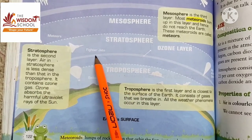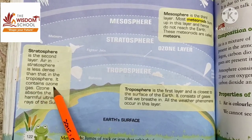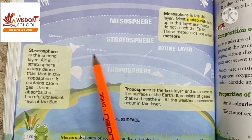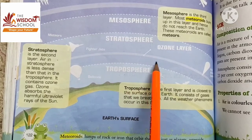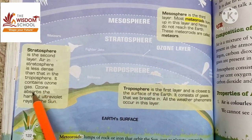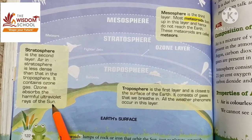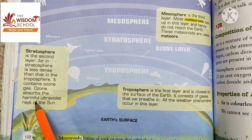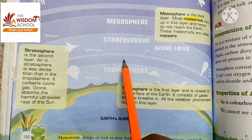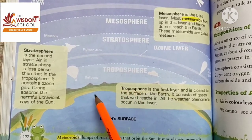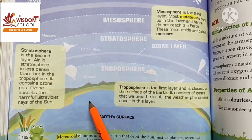The stratosphere contains ozone gas, which is also known as the ozone layer. The ozone layer absorbs the harmful ultraviolet rays of the sun, so that the rays that reach us are not harmful.